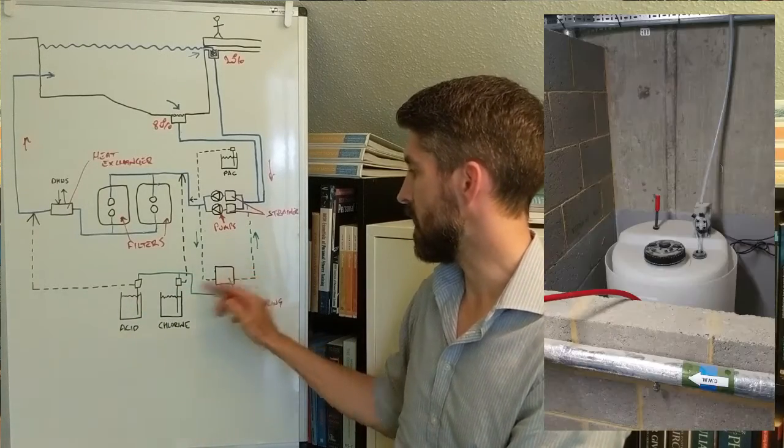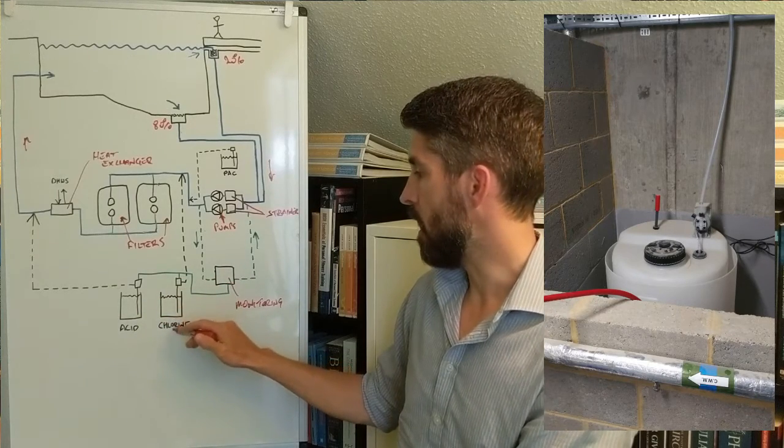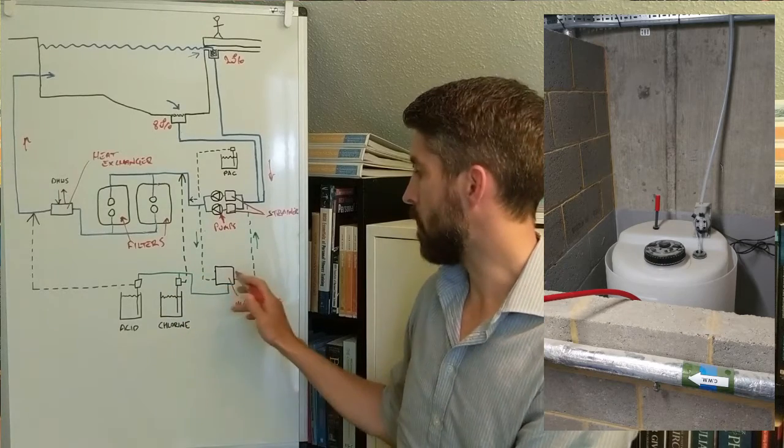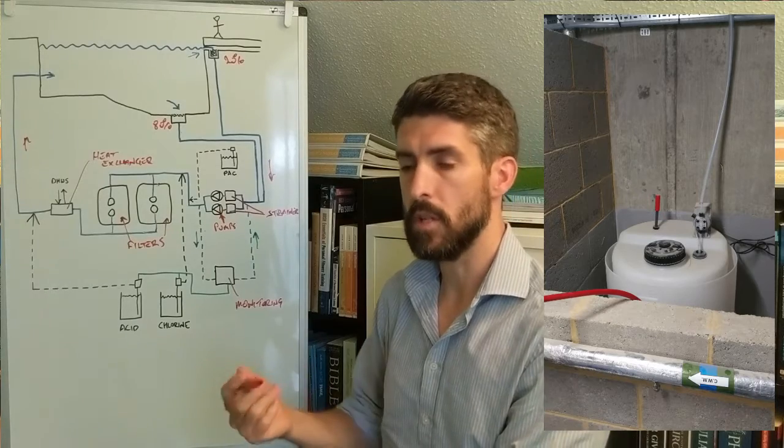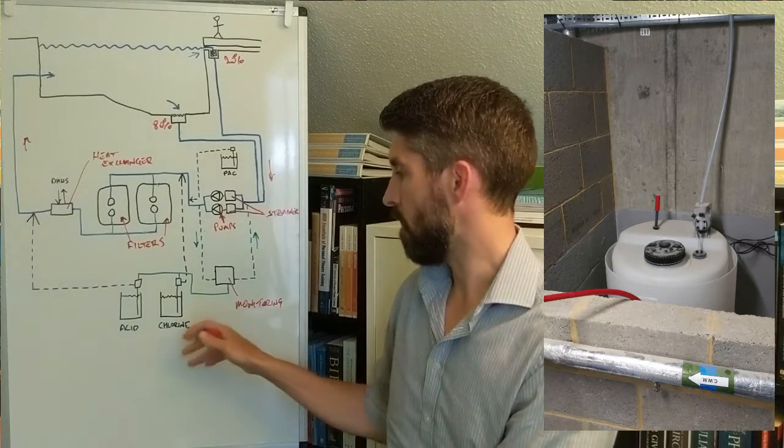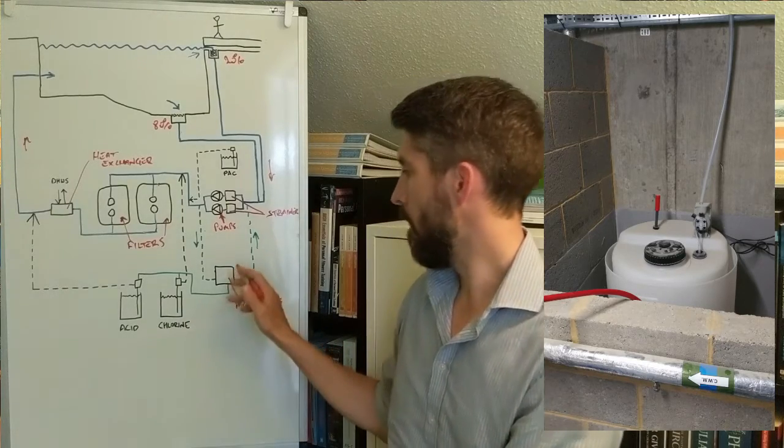It's in constant communication with your acid and your chlorine, telling your chlorine to either pump or not pump. This monitoring equipment is programmable. You can program it to achieve a certain set point. For example, if you want to achieve a chlorine level of 2 in your swimming pool, this might be programmed to achieve that.